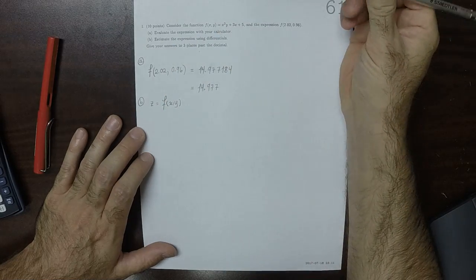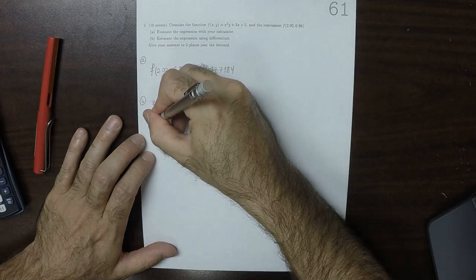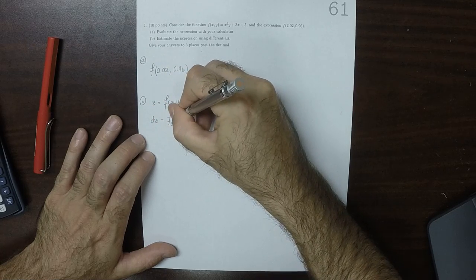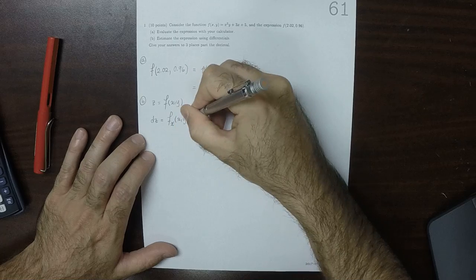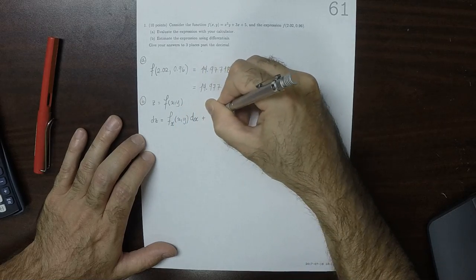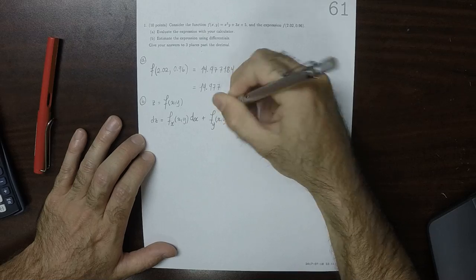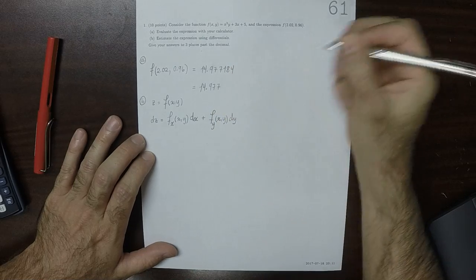We can compute the differential of z. So the differential of z is the x partial dx, and then plus the y partial dy.